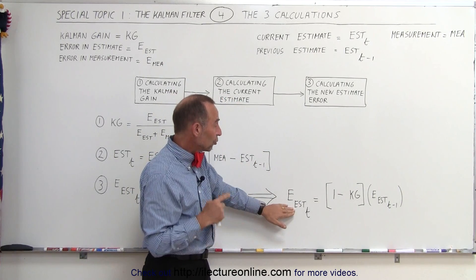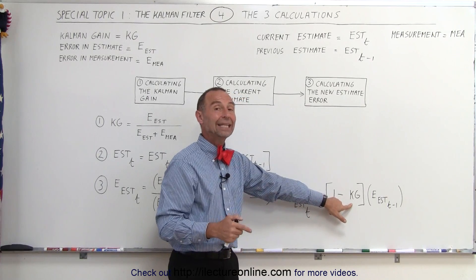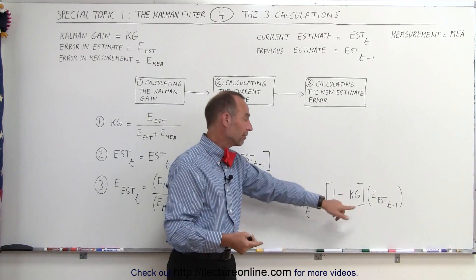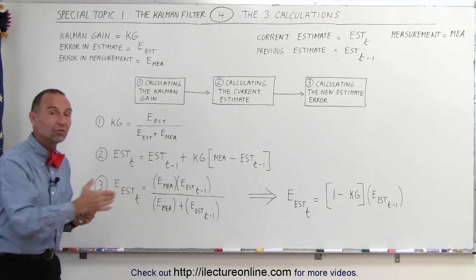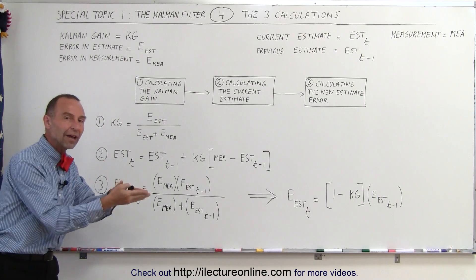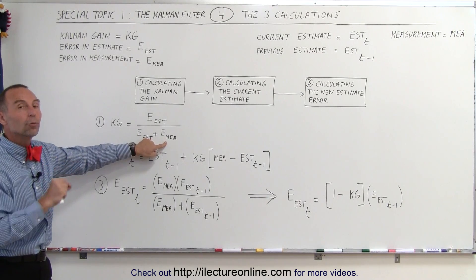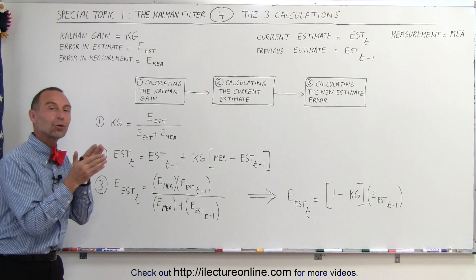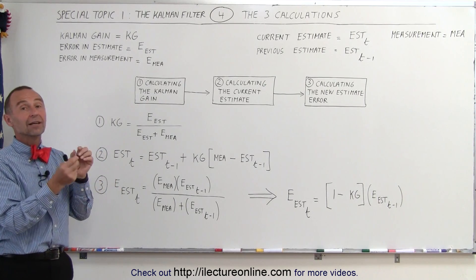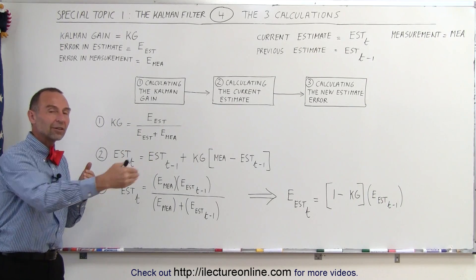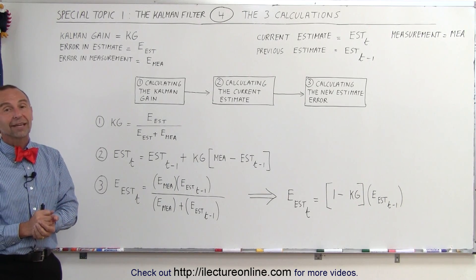In all cases, notice that the error in the estimate will always be smaller than the previous one — the error in the estimate will get small over time, especially if the Kalman gain is large. If the Kalman gain is small it will take a little longer; if it is large, it will go much more quickly. So those are the three calculations. You can see how the Kalman gain drives the speed at which the estimated value zeros in on the true value — it all depends on the expected error in the measurement. The Kalman filter gets us there much more quickly than just about any other method, producing accurate estimated values close to the true values even when measured values have significant error or uncertainty. And that's the beauty of Kalman filtering and the Kalman gain.